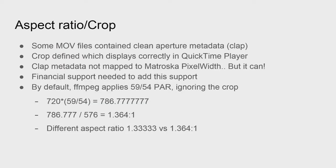But by default when you're encoding, the crop is pretty much ignored. The 59 divided by 54 is applied to the 720, and it produces 786 pixels wide, which then produces an aspect ratio of 1.36 — not 4 by 3. Previously, Axia Control Room and Blackmagic Media Express would just use a different pixel aspect ratio, 16 by 15, and it would at least show up as 4 by 3, but you would still have those black bars.